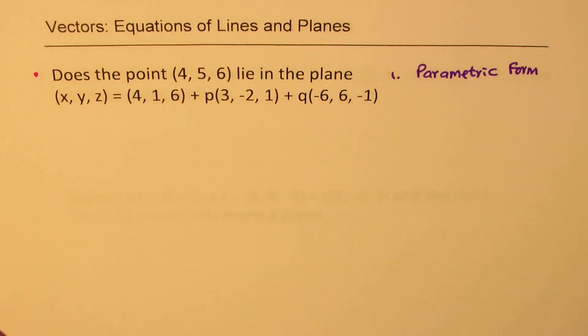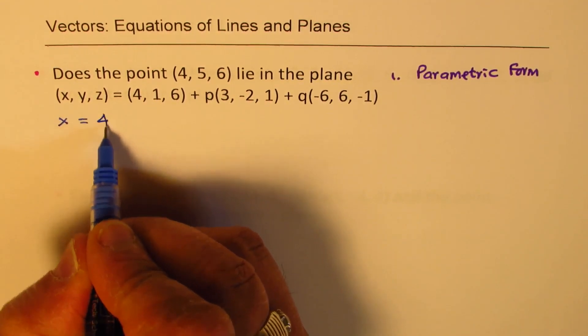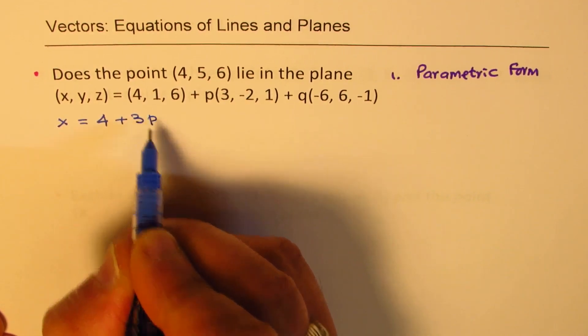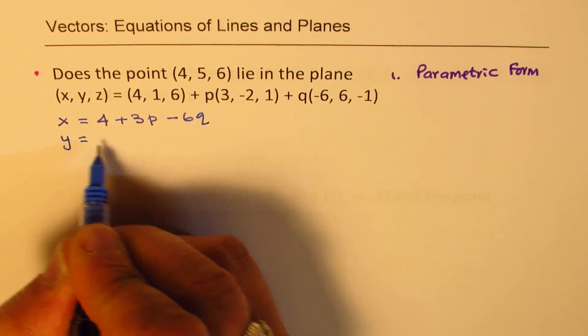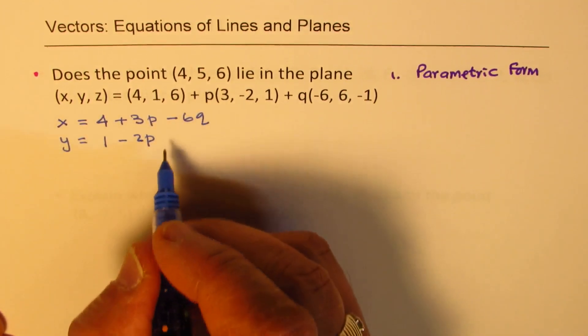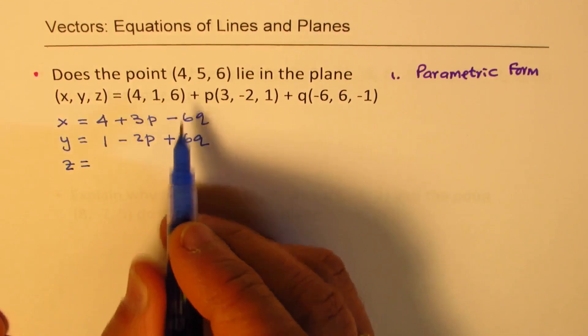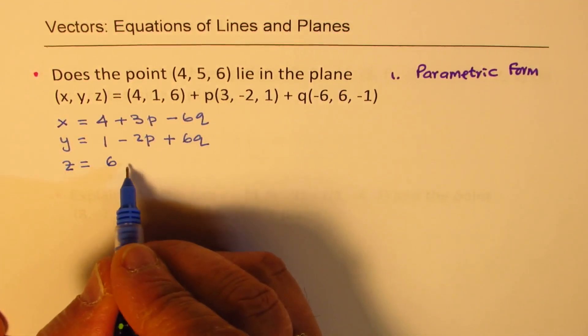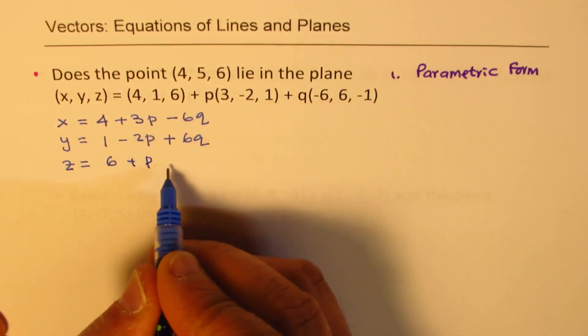So we are given the vector equation. First step number one should be, write parametric form. So which will be, we'll write x as equal to 4 + 3p - 6q. y value will be 1 - 2p + 6q. z will be equal to 6 + p - q.